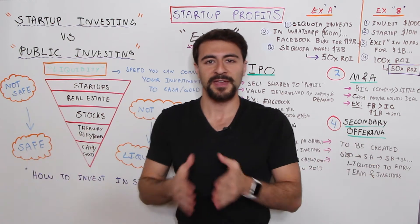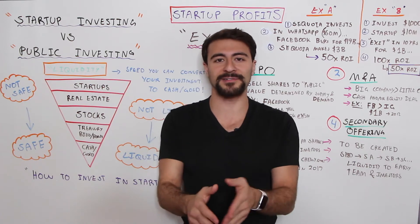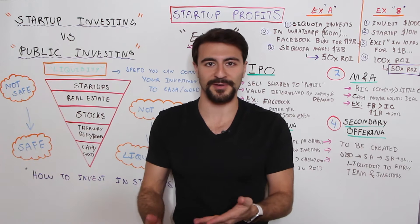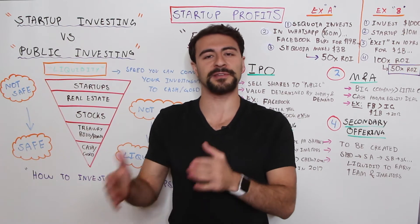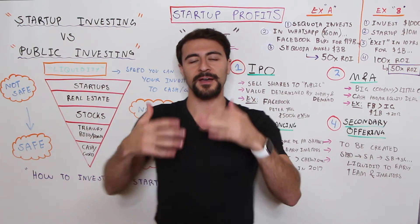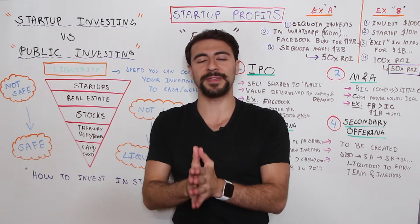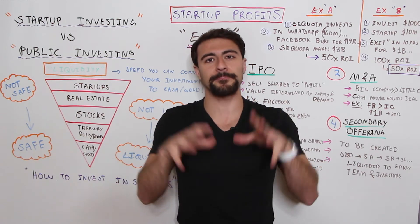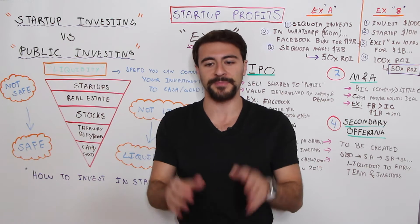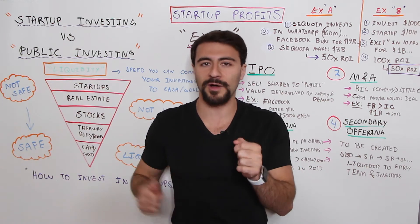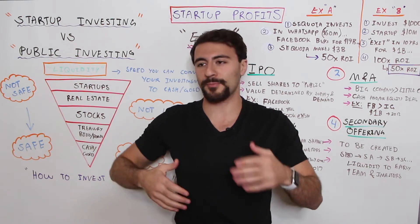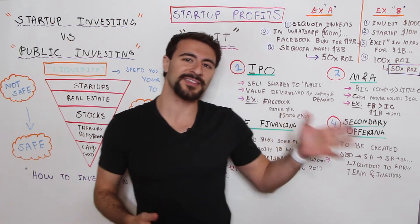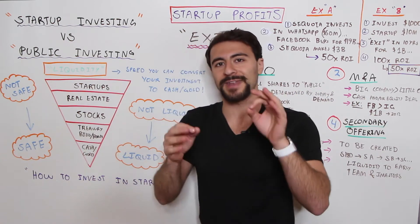The only way you can actually make a return on any investment is that the value of the company needs to appreciate — the company needs to become more valuable. Either a future round of financing or one of the four liquidity events we'll talk about is how you'll achieve your exit. Ideally, the company is worth more when you exit than when you purchased your shares initially. You're pretty much glued to the company, whether it succeeds or fails, until you have some sort of an exit opportunity.